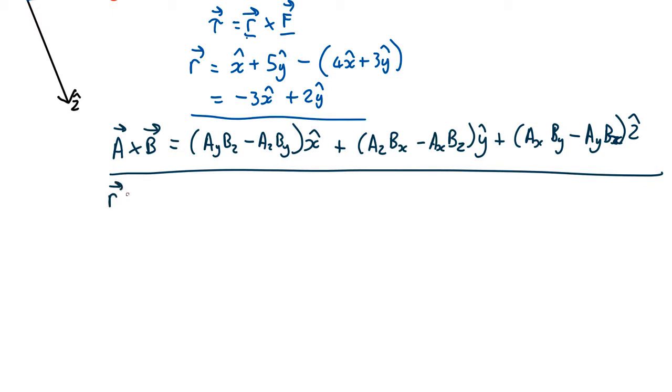So r cross f is equal to the y component of r, which is 2, times the z component. Now there are no z components of anything, so that's going to be 0.